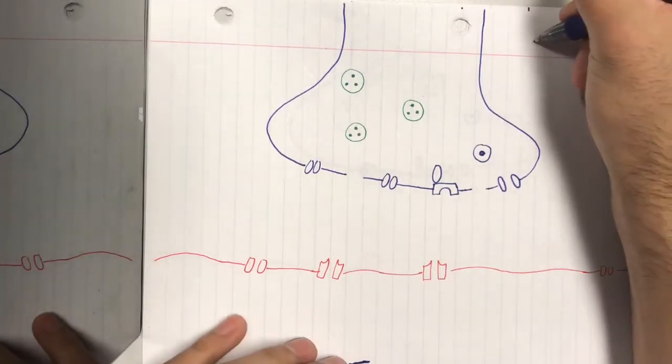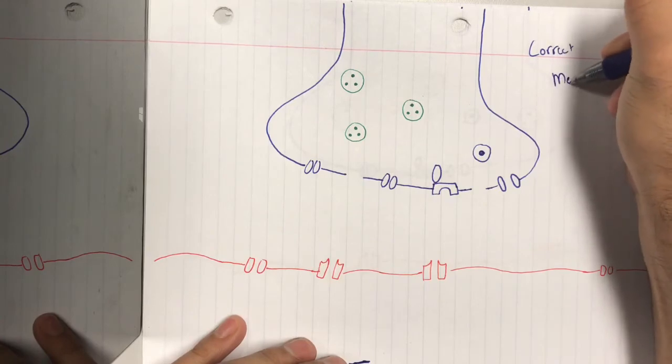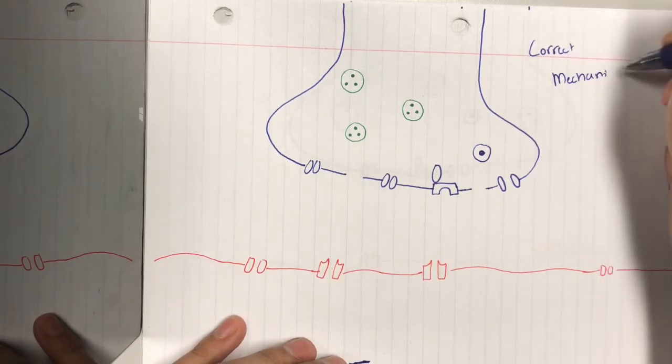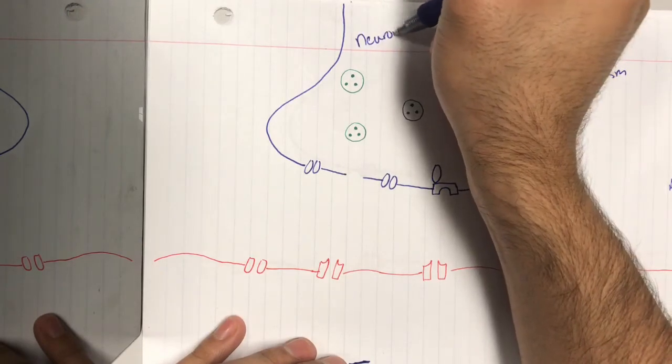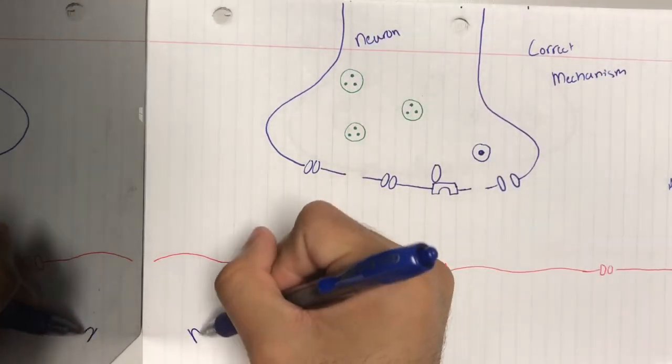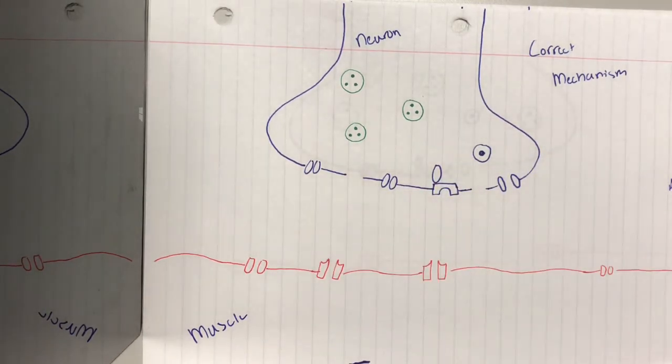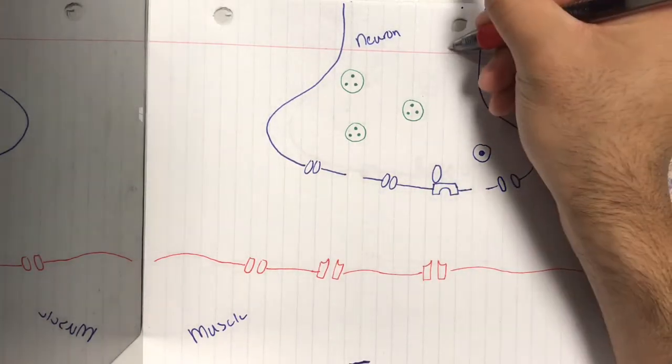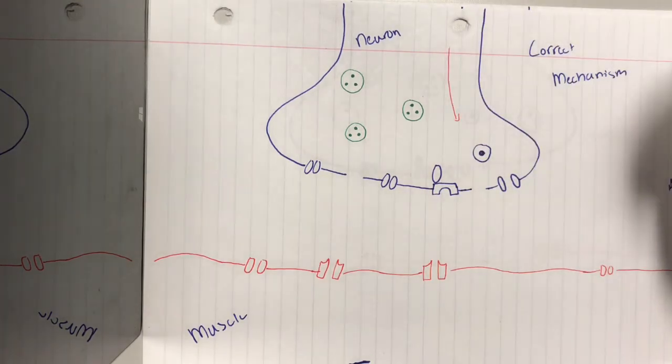All right. So, this is the correct mechanism. This is a neuron. And this is a muscle over here. What happens first is there's going to be an action potential that comes down. That's going to happen due to depolarization, and that's going to cause what's called the